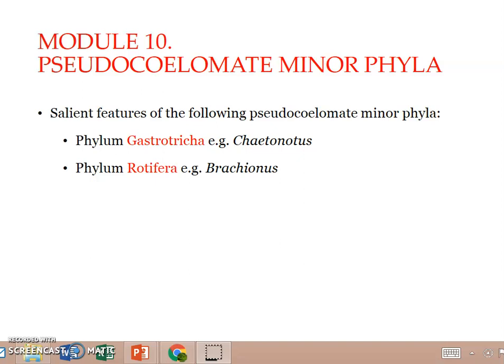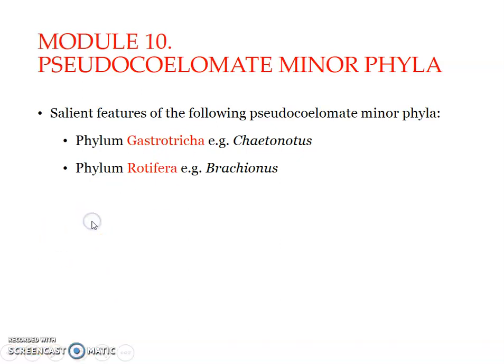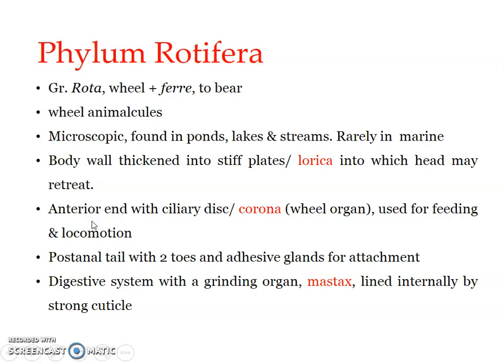Here we will discuss phylum Rotifera. The name comes from two Greek terms: 'rota' means wheel and 'ferre' means to bear. They are commonly referred to as wheel animalcules. Because of their structural features, their peculiar movement is similar to the rotation of a wheel. They are provided with cilia, and with the cilia they bring about movement almost similar to the rotation of a wheel.